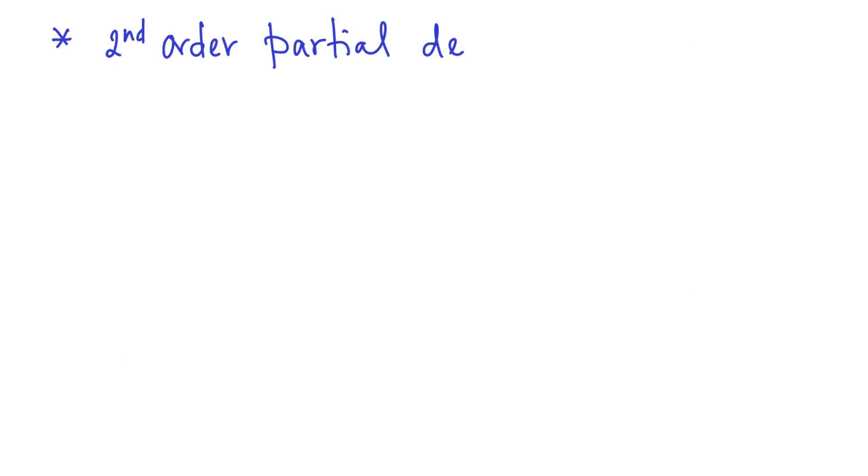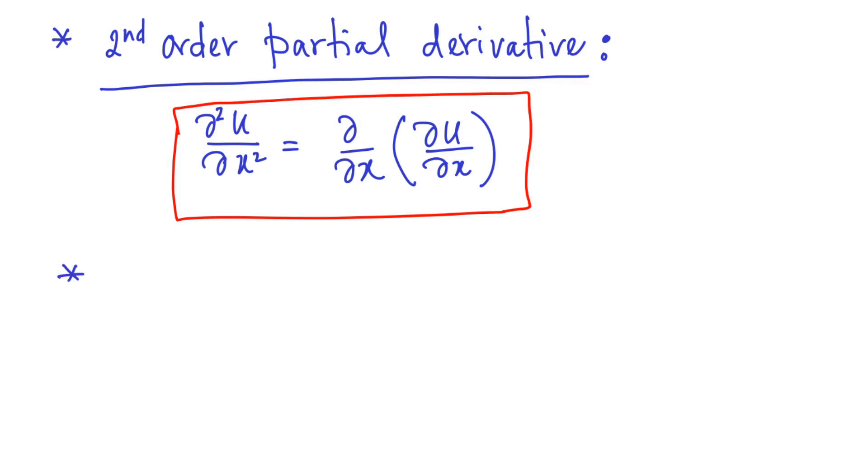So we can now define second order partial derivative as you see it here. Using definition of derivative, we can establish that partial derivatives commute.